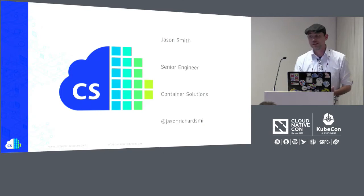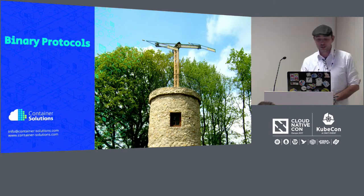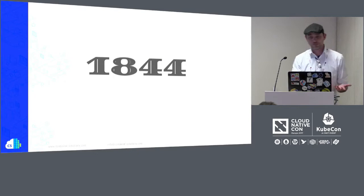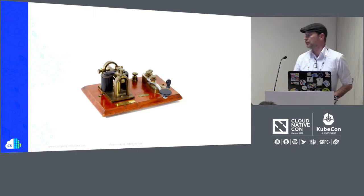So today I'm going to be talking about binary protocols. But before I get into what you probably came here to see, I'm going to start a little earlier at the beginning. We're going to go back to 1844. In 1844, the Telegraph was released. It became incredibly popular. The lines spread all over the world. And on those lines, there was an encoding — we're all familiar with it — Morse code.